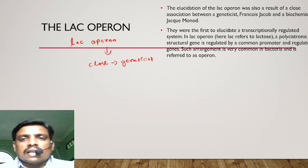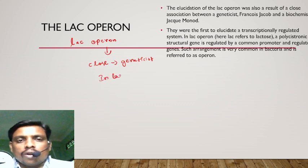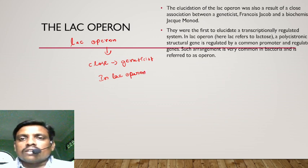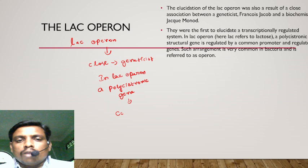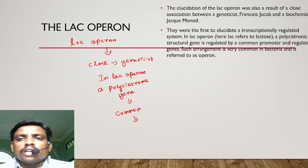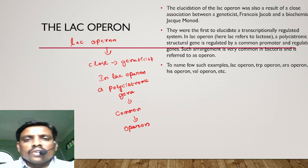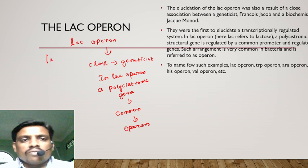Let us explain the transcriptionally regulated lac operon. Lac refers to lactose. It is a polycistronic system, meaning multiple structural genes are present regulated by a common promoter and regulatory genes. Such an arrangement is very common in bacteria and is referred to as an operon. Examples include lac operon, trp operon, ara operon, his operon, and val operon.